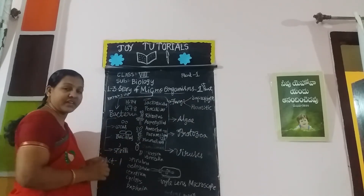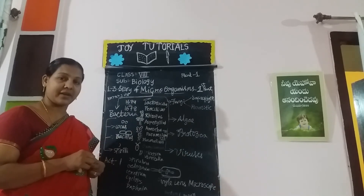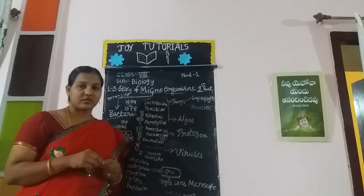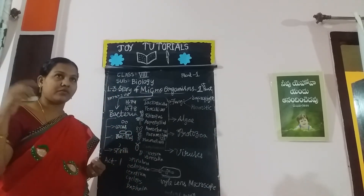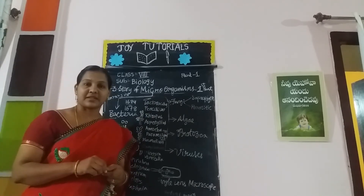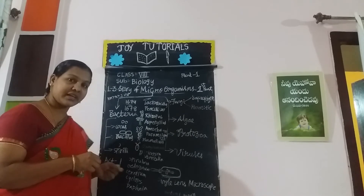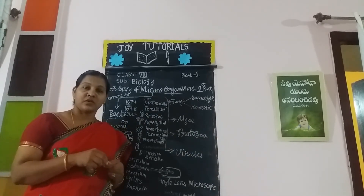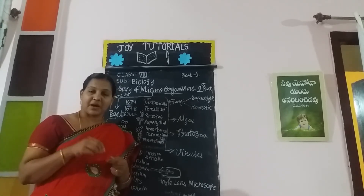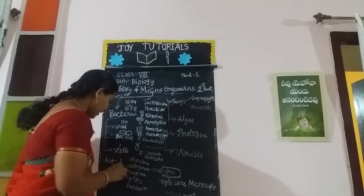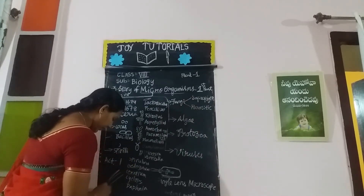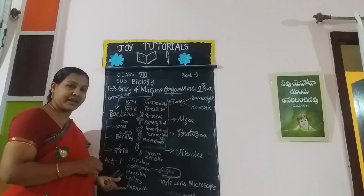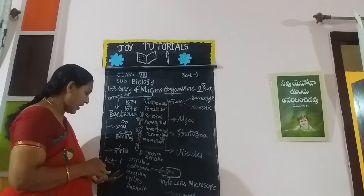Activity 1: Observing algae. The aim is to observe algae. We need to collect some water from a water tank or pond. We collect some green color scrapings, take a small amount on a glass slide, spread it, cover it with a cover slip, and observe it under the microscope. We draw a rough sketch in our diagram and compare it with the textbook diagram to get an idea about algae.